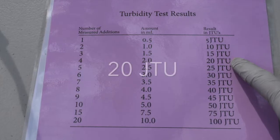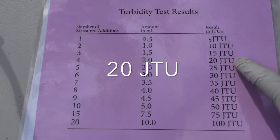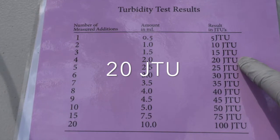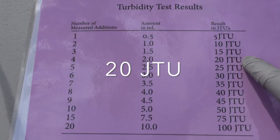We added 4 dropper fulls, or 2 ml, to our distilled water, which equals 20 Jackson Turbidity units.